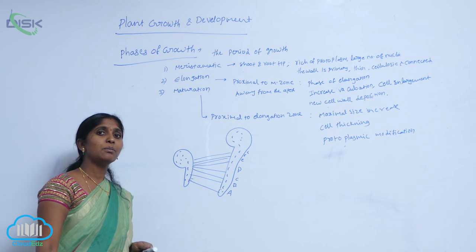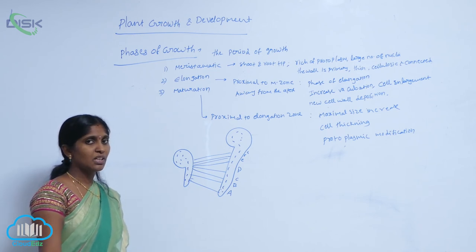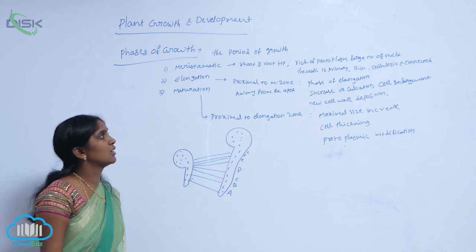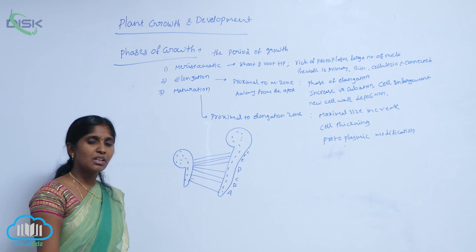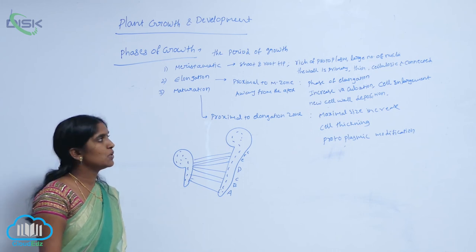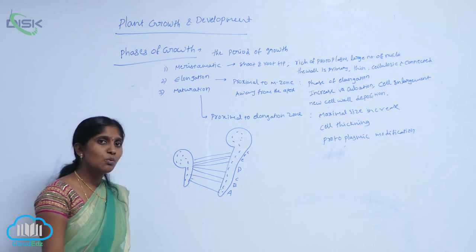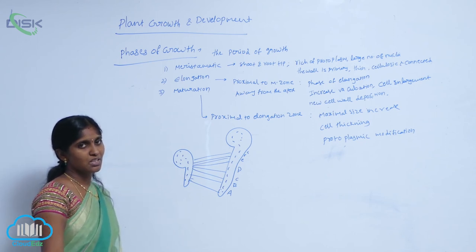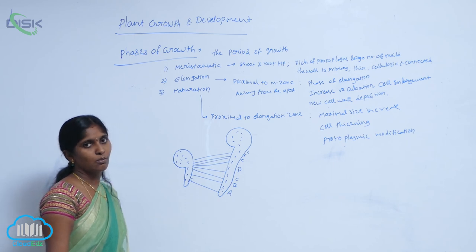The cell becomes enlarged. How is it enlarged? Protoplasm is increased, and increased vacuolation promotes cell elongation. New cell wall depositions also occur. The lignins are deposited in the cell walls as they mature.